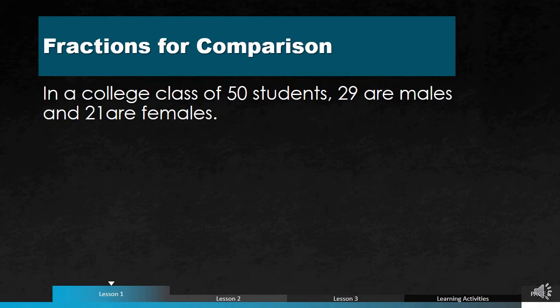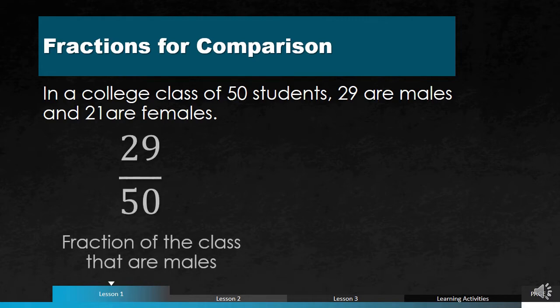Let's say in a college class of 50 students, 29 are males and 21 are females. So we can consider 50 as the total number of students, and this represents the part. If we express the males as a fraction, 29 would be the numerator — representing the number of male students — and 50 is the total parts, so you have 29 out of 50 students.